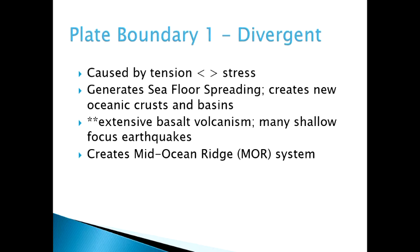We call this a divergent boundary because the plates are diverging. It's caused by tension stress — the two arrows pointing in opposite directions. Tension, in a physical science sense, means pulling apart. This is where we create seafloor spreading. The fingerprint or signature of a divergent boundary is extensive basaltic volcanism and many shallow focus earthquakes — breakages in the earth very near the surface.